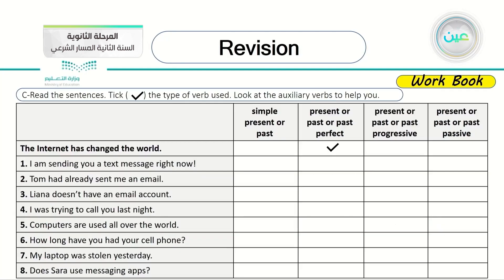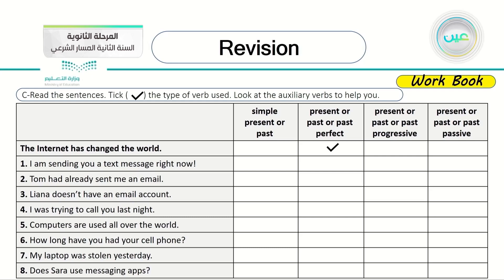This is another exercise: read the sentences, take the correct mark, then identify the type of verb used. Look at the auxiliary verbs to help you. We have categories: simple present or past, present or past perfect, present or past progressive, and present or past passive. The first one is already done — 'The internet has changed the world' goes in the present perfect category because 'has' signals past perfect.